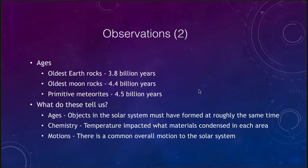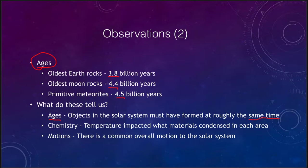We also know about the ages of objects in the solar system. Earth rocks are about 3.8 billion years old, the oldest moon rocks about 4.4 billion years old, and very old primitive meteorites at about four and a half billion years old. The ages tell us that things formed at roughly the same time — that the formation of the solar system did not take billions and billions of years, that it formed relatively quickly, because we have ancient meteorites and moon rocks very close to the same age, and very close to our estimated age for the Sun.